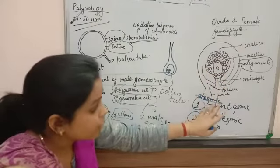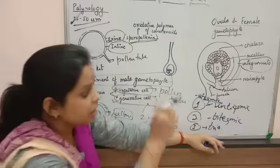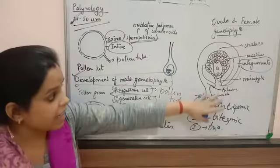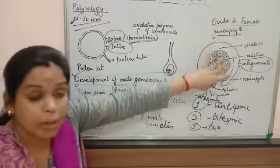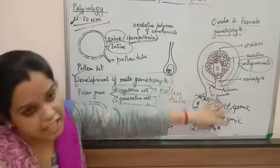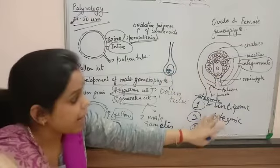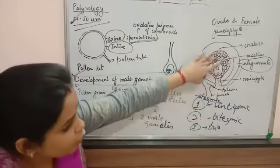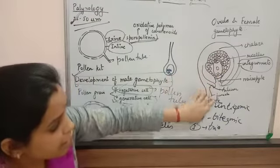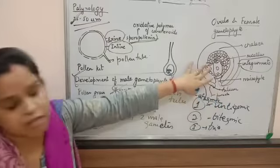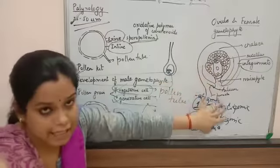Hilum and funicle are stalks used for connecting the ovule to the placenta. Hilum connects the ovule to the funicle, and the funicle connects the whole structure with the placenta.